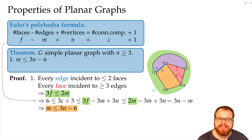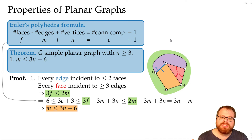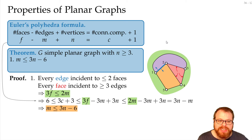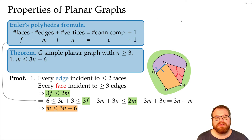This type of double counting — a charging argument — is something you use many times. You charge every edge to some face and every face to some edge, and count how many charges move around. This is similar to the handshaking lemma we had earlier, and we can use it to figure out the number of edges and other properties.